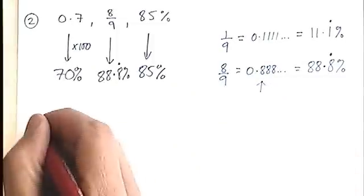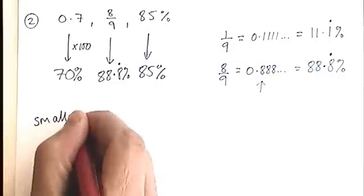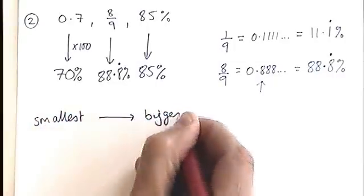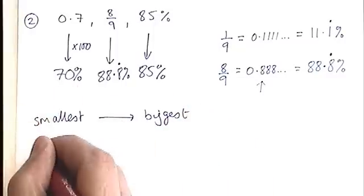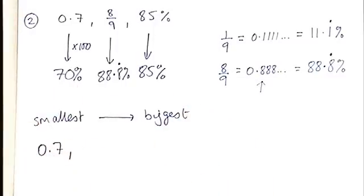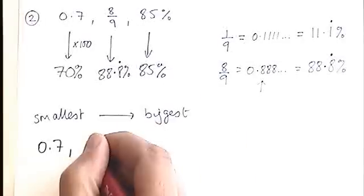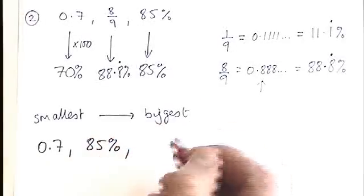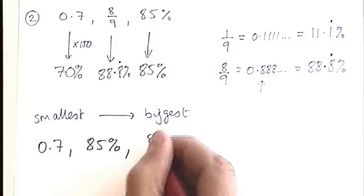So let's have a look, smallest to biggest. The smallest number here is 70%, which in its original format was 0.7. The next biggest number is 85%. And then the largest number was 8 ninths.